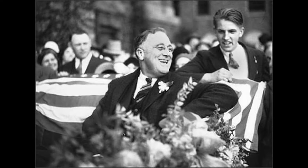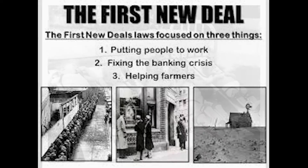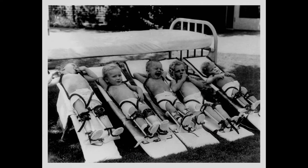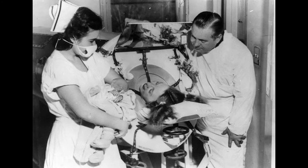In 1924, at the Democratic Convention, Roosevelt made a dramatic appearance on crutches to nominate Alfred E. Smith as the 'Happy Warrior.' In 1928, Roosevelt became Governor of New York, and in 1932 he was elected president during the Great Depression, burdened with fixing the economy while also dealing with his own illness. At its peak during the 1940s and 50s, polio would paralyze or kill over half a million people every year around the world.